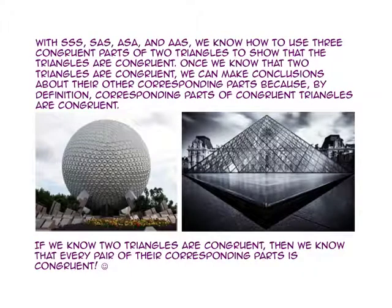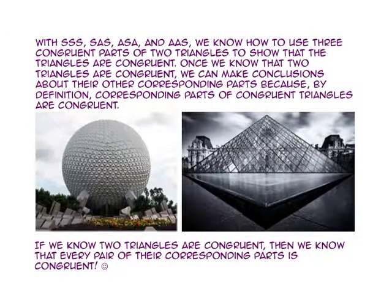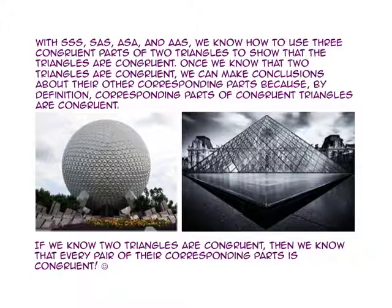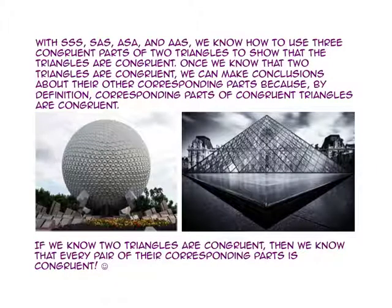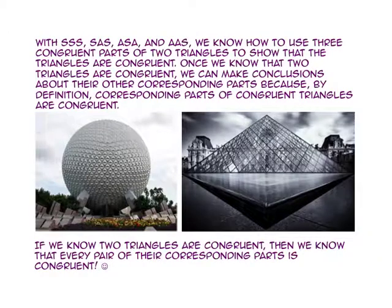With side-side-side, side-angle-side, angle-side-angle, and angle-angle-side, we know how to use three congruent parts of two triangles to show that the triangles are congruent. Once we know that two triangles are congruent, we can make conclusions about their other corresponding parts because, by definition, corresponding parts of congruent triangles are congruent. If we know two triangles are congruent, then we know that every pair of their corresponding parts is also congruent.